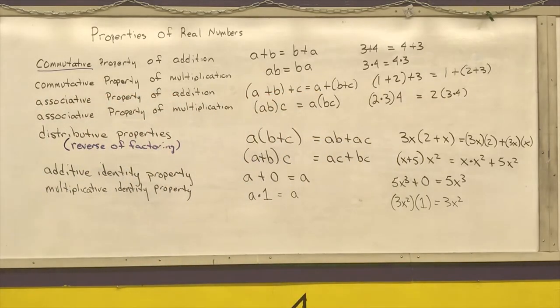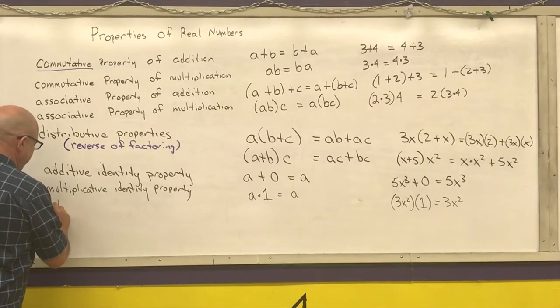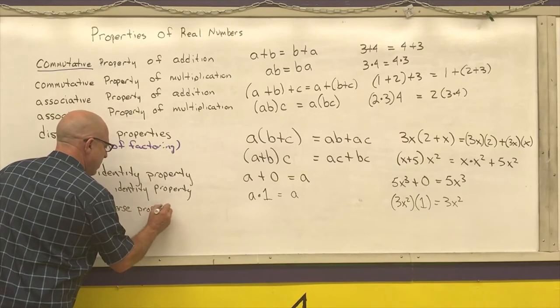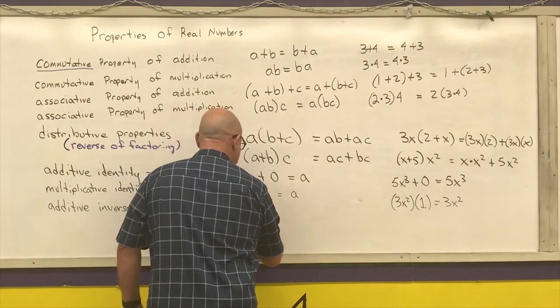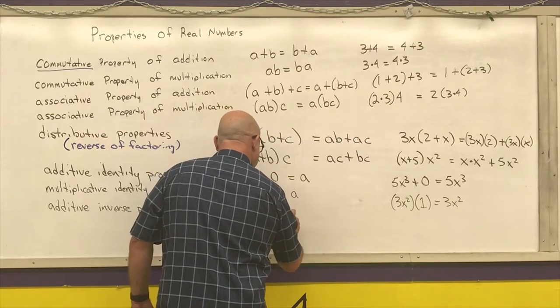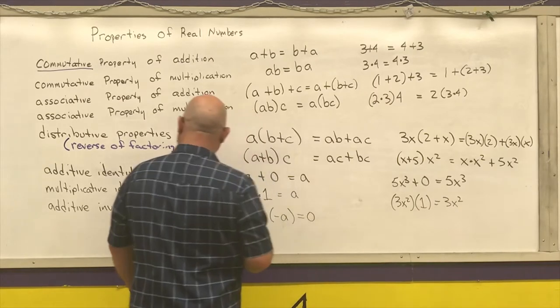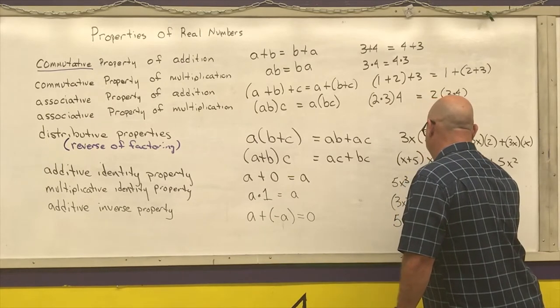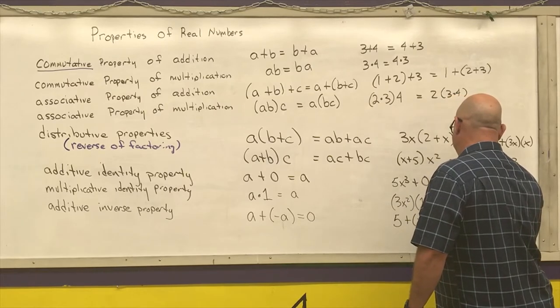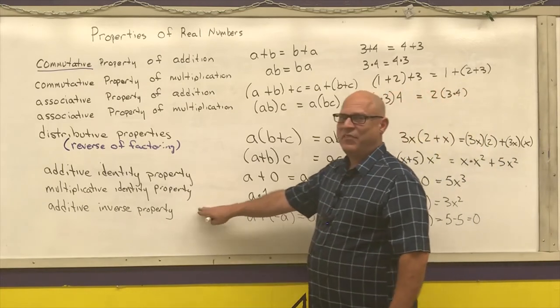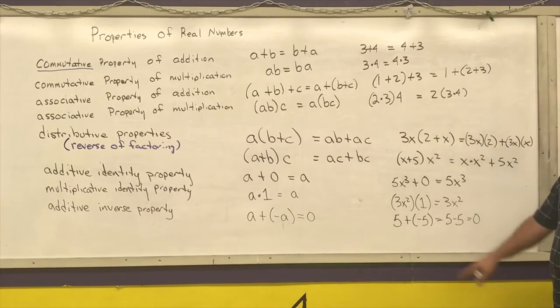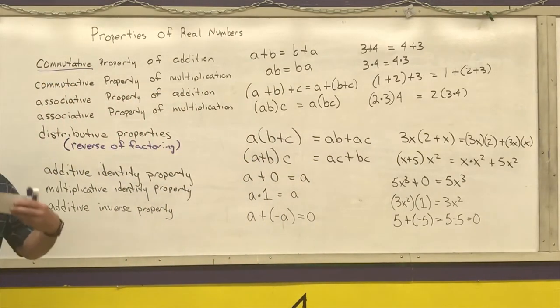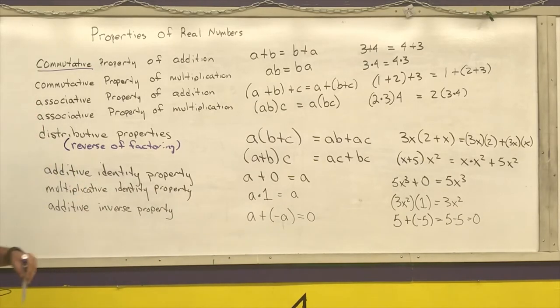And our last two properties are our inverse properties. We have the additive inverse. That says any number plus its opposite is equal to 0. So that would be, for example, 5 plus a negative 5, which is the same thing as 5 minus 5 is equal to 0. It's from this additive inverse property that we get the definition of what subtraction is. Subtraction is just adding an opposite. So when I cover the order of operations, I say that we do addition. I do not cover subtraction because subtraction is just adding an opposite of a number.